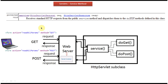If you want to send a GET request to the web server, in the form tag there is an attribute called method, and you just specify 'get'. If you want to send a POST request to the web server, you just specify 'post'.